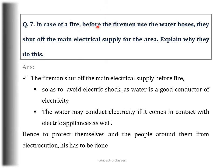Question number 7: In case of fire, before the firemen use the water hoses, they shut off the main electrical supply for the area — explain why. They shut it off to avoid electric shock, as water is a good conductor of electricity. If the water comes in contact with any electrical appliances, it conducts electricity and might harm the firemen carrying the hose, as well as the people around them. So in order to avoid this, firemen shut off the main electrical supply before using the water hoses.